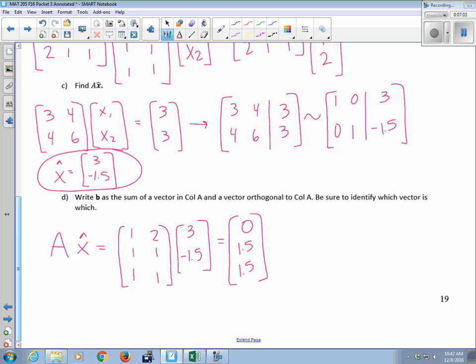What was B? B, 0, 1, 2. So this is, like, close to B. That's as close to B as I can get. 0, 1.5, 1.5. We could say this is approximately B, 0, 1, 2. All right, as close as we can get by taking a linear combination of the columns of A.